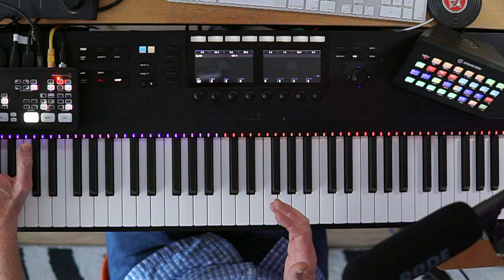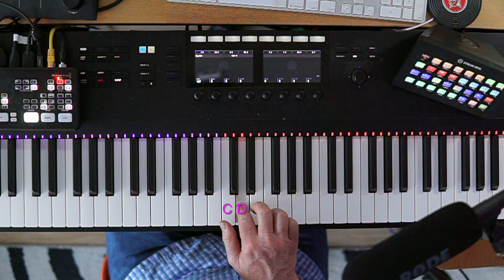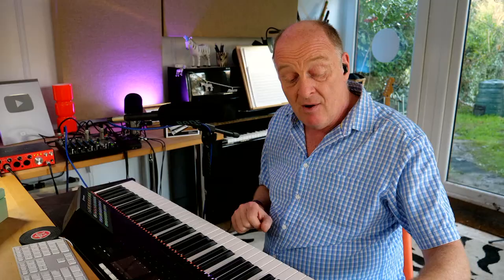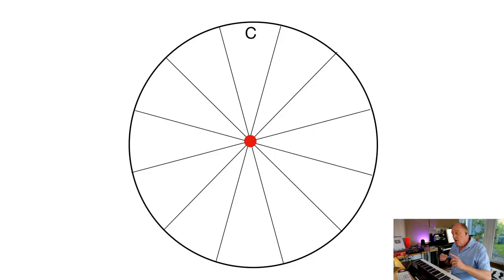C major is pretty straightforward because it's just white notes on the piano. Let's start on C and go up five notes — one, two, three, four, five — and five takes us to G. The key is: when you go round five notes to the next one, you get to G.